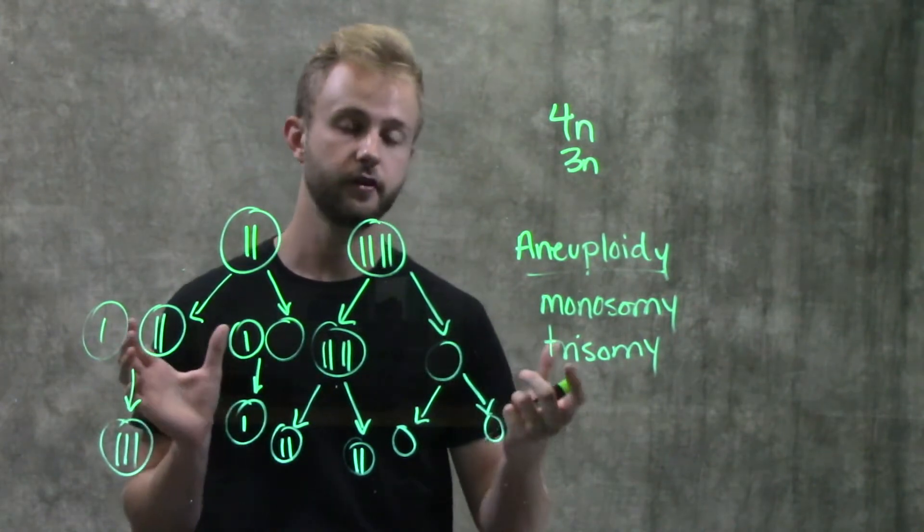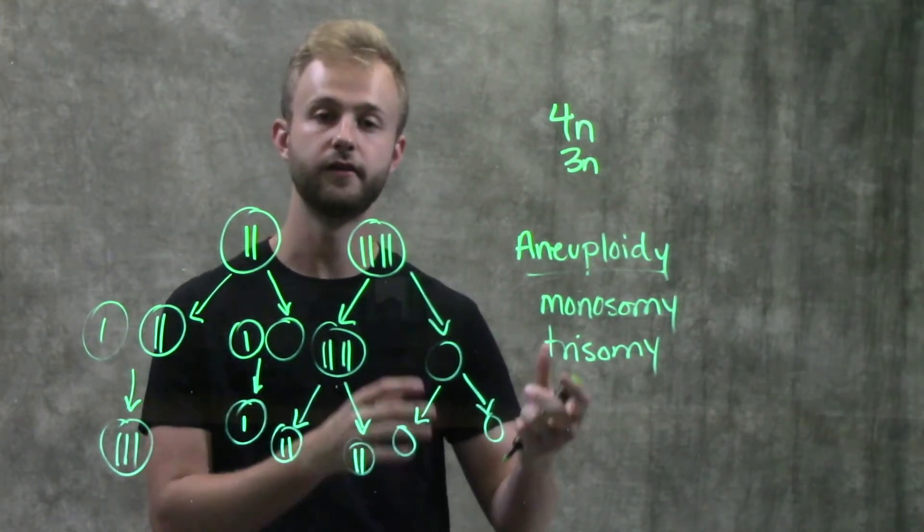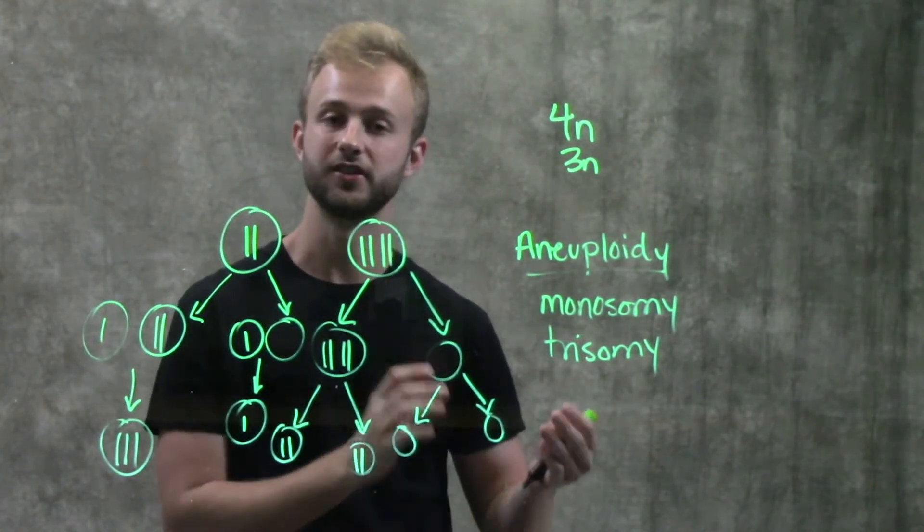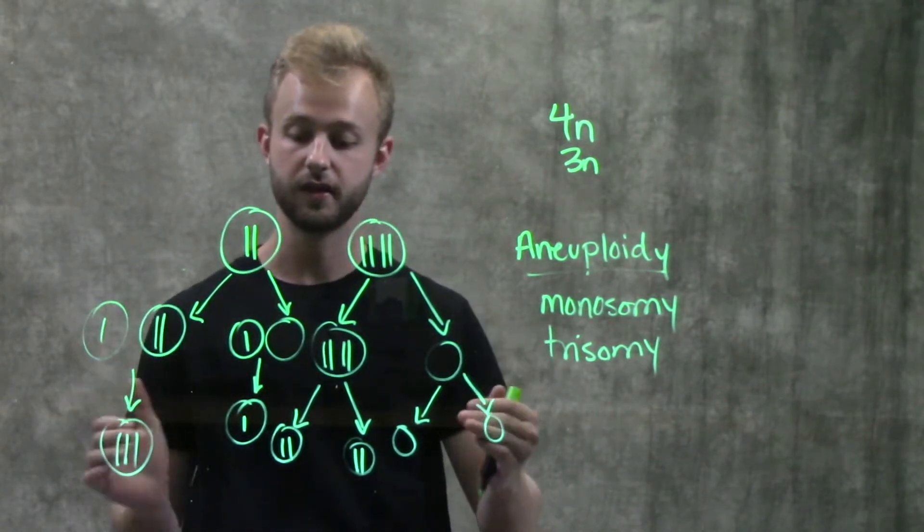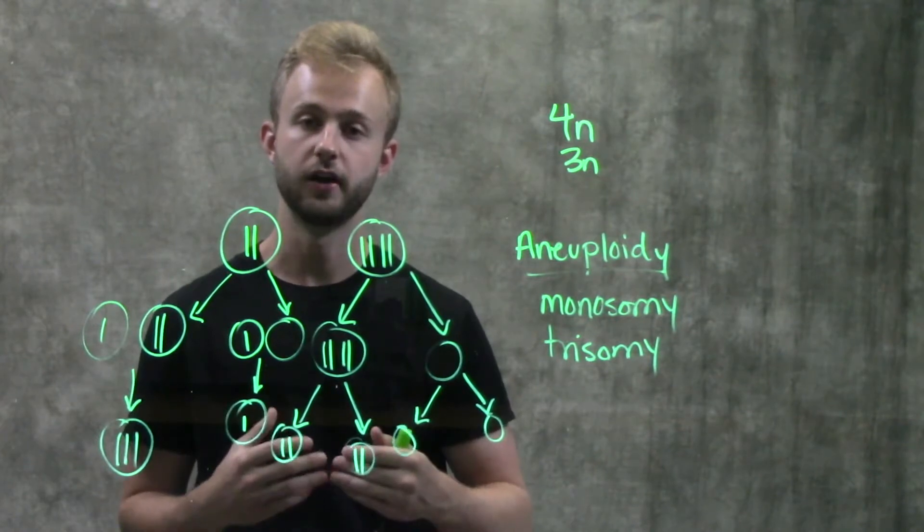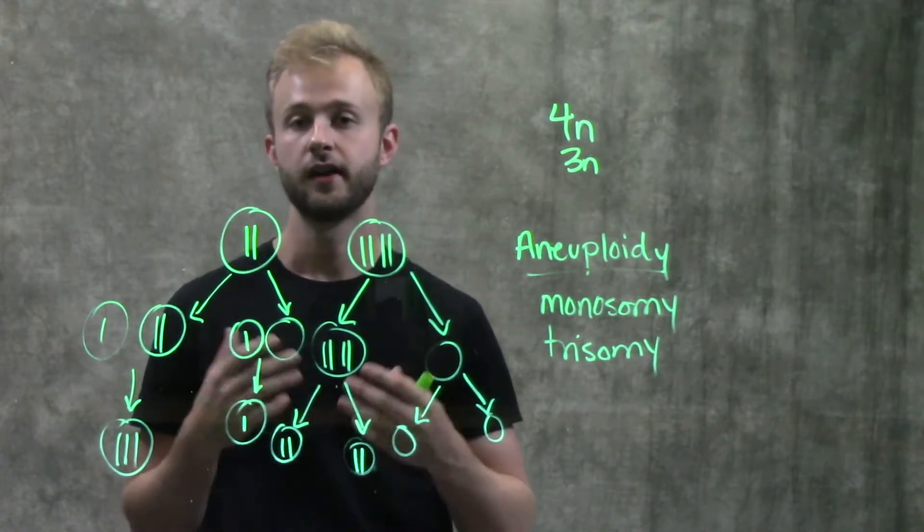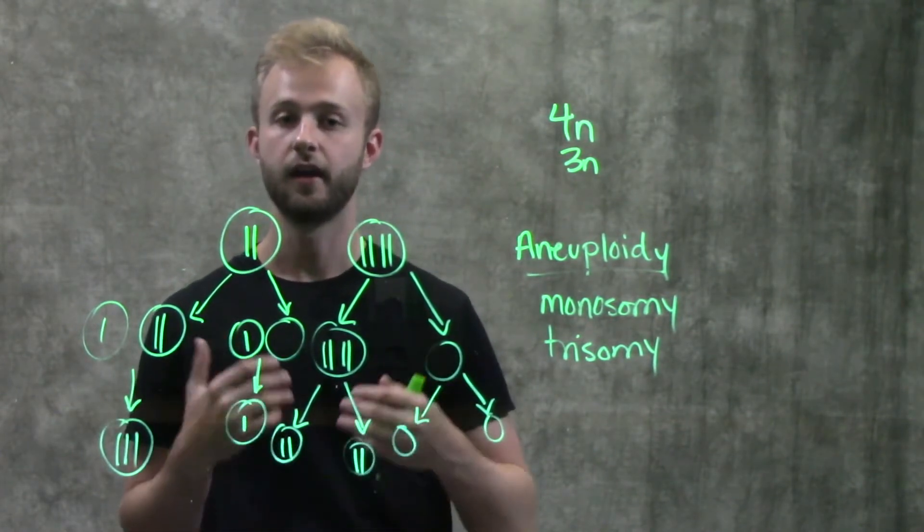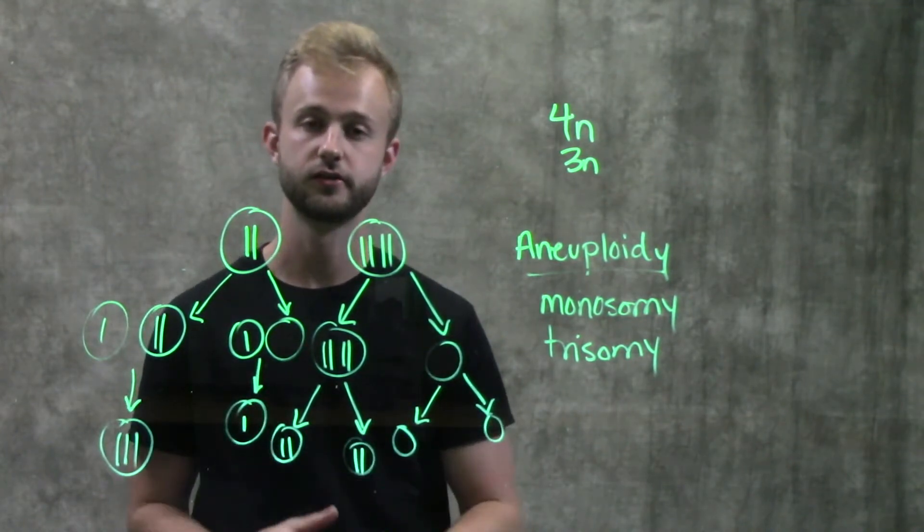So there's a lot of different ways that we can have abnormal numbers of chromosomes in our cells, but a lot of them really depend on this process of non-disjunction taking place. So it's really important to understand what non-disjunction is and how it works and how that can affect the resulting gametes and eventually the resulting zygotes.